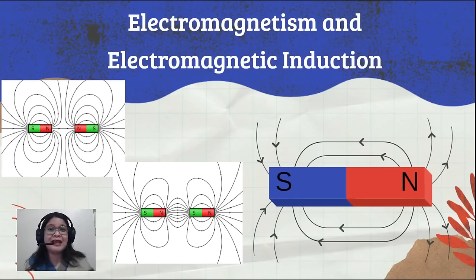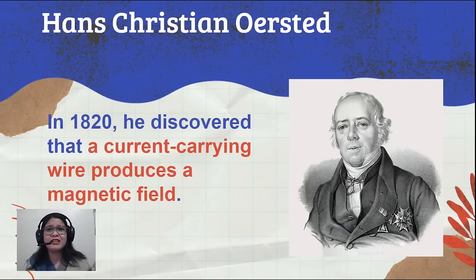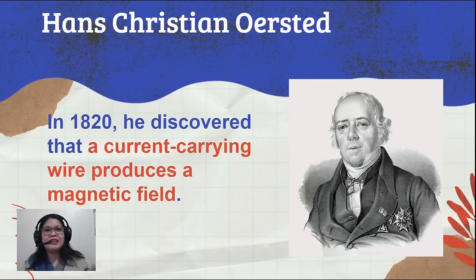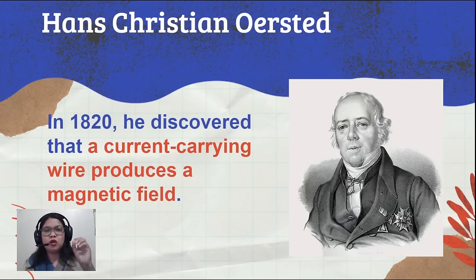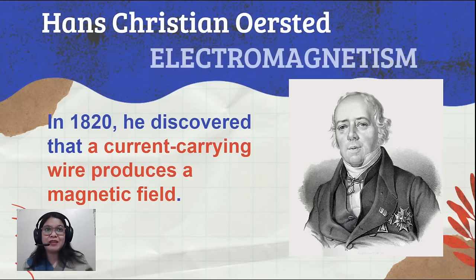So who are these two scientists we need to remember? First, we have Hans Christian Orsted, who was already discussed when we started talking about electromagnetic waves. What he discovered is that a current-carrying wire produces a magnetic field. In 1820, while delivering a lecture, he had a circuit and a compass. When he turned on the switch of his circuit, he noticed that the compass had a deflection. From there, he discovered that electricity could produce magnetism.